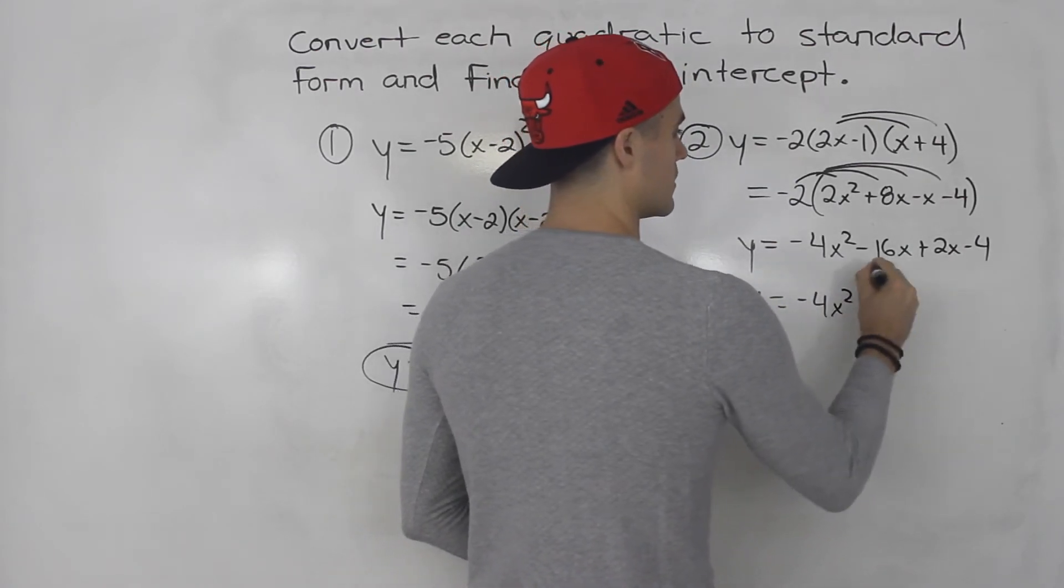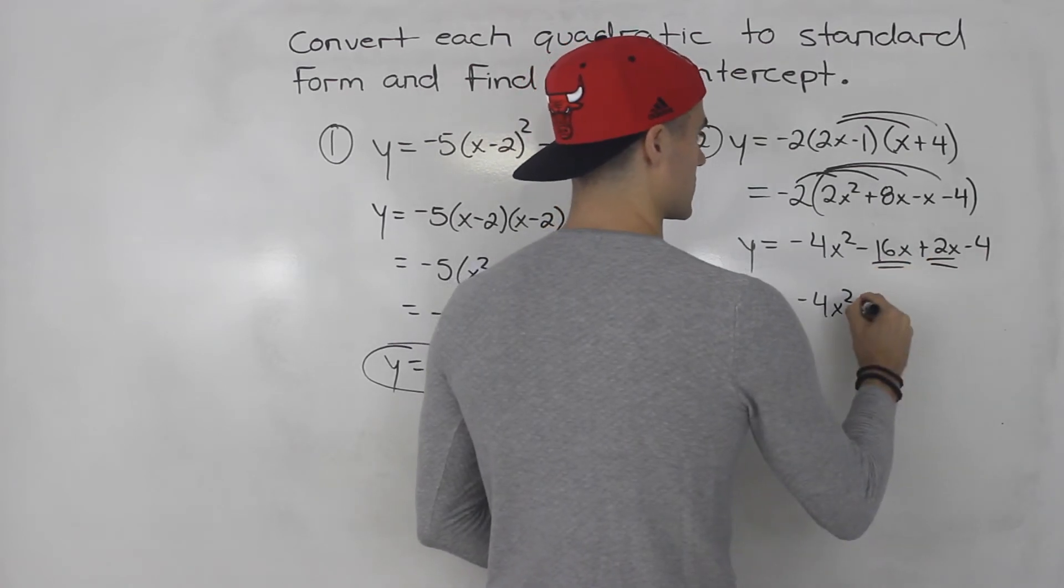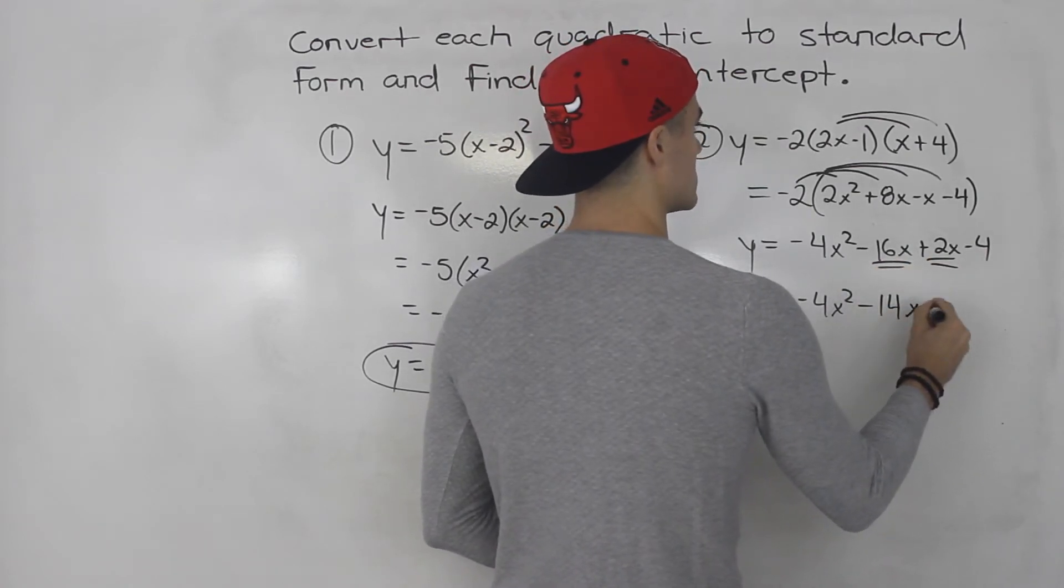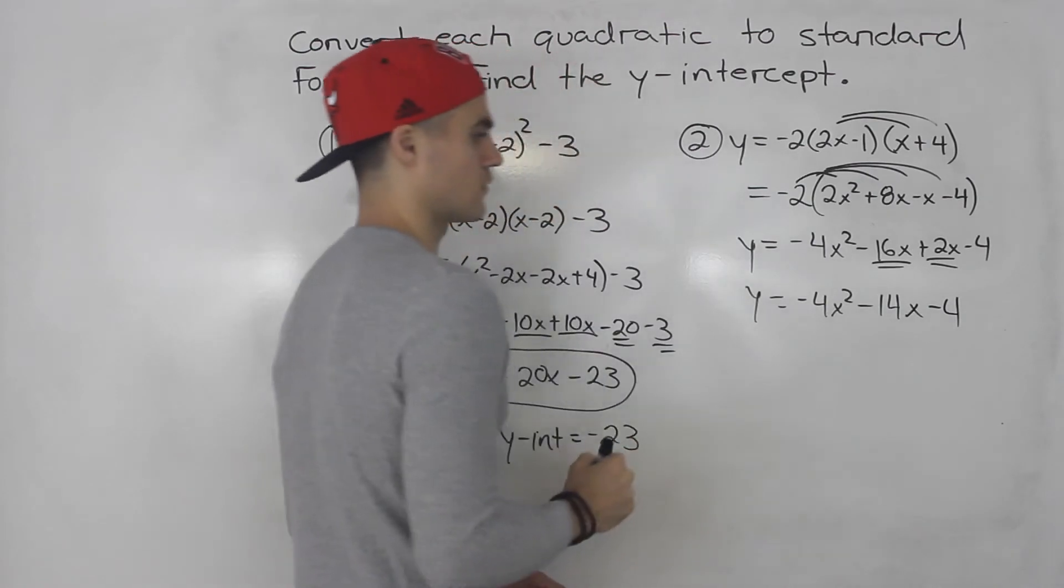Negative 4x squared. These are like terms which would give us negative 14x minus 4.